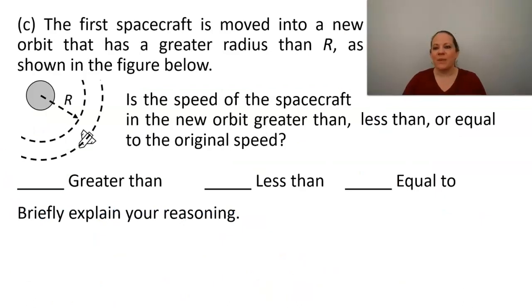And at last, part C, the first spacecraft is moved into a new orbit that has a greater radius than r, as shown in the figure below. So, is the speed of the spacecraft in the new orbit greater than, less than, or equal to the original speed? Briefly explain your reasoning. So once again, we're going to briefly explain first, and then we will come back to check a line that makes sense based on our reasoning.